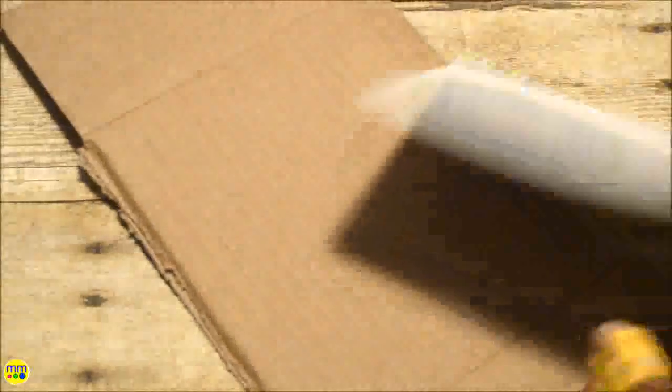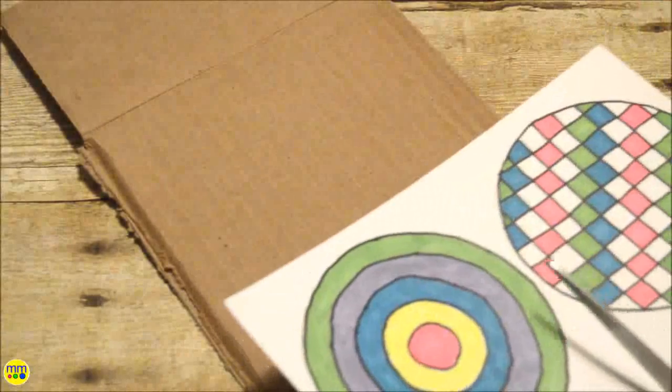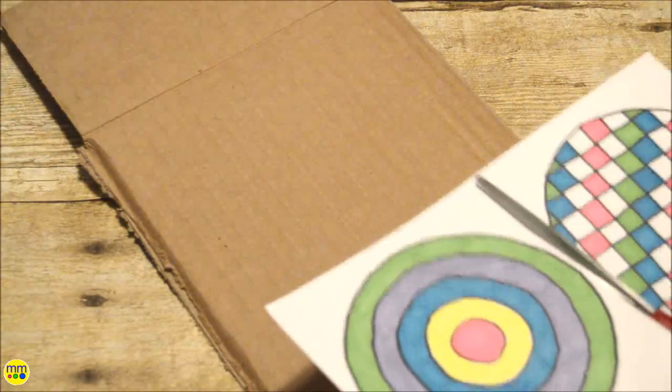Glue one piece of your paper on your recycled cardboard scrap, cut around it, and glue the second pattern on the other side.